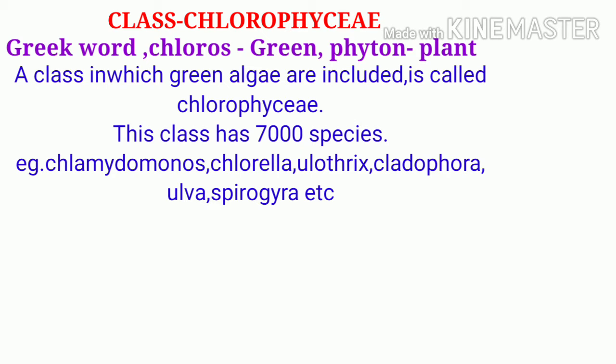A class which is called green algae is called Chlorophyceae, due to the presence of Chlorophyll A and B. In this class, about 7000 species are included.